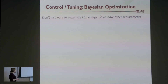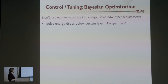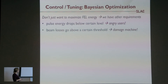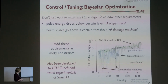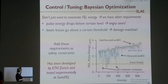In practice, we have other requirements — we don't just want to maximize FEL energy. If the pulse energy drops below a certain level, we have angry users. If beam losses go above a certain threshold, we'll damage the machine. So we want to add these as safety constraints. This has been tested at SwissVel, developed by folks at ETH Zurich. The comparison shows an algorithm without safety constraints versus one with them — you don't get the dropouts nearly as much with the constrained version.